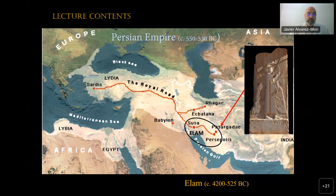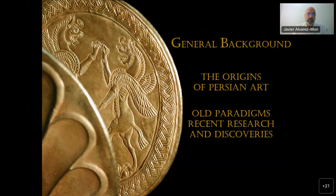Throughout this lecture we are using the label 'guardian angel' rather than the more common 'winged genius,' which appears throughout the literature. When considering the status of the origins of Persian art, the scholar is confronted with deeply rooted narratives and stereotypes that define Persian cultural identity and local heritage. In my view, three main paradigms have informed, and in many ways continue to inform, views on the genesis and formation of Persian artistic identity.